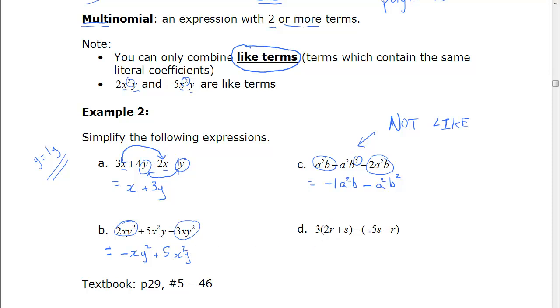The last example is a little different. We have a bracket here and something outside. So we need to use the distributive property first. Same thing with the minus here.